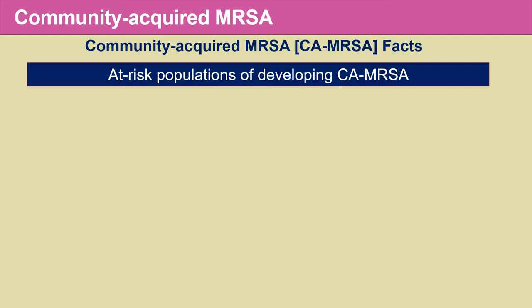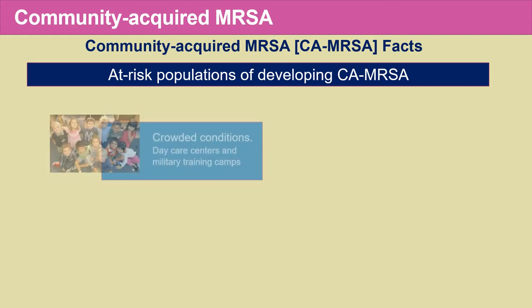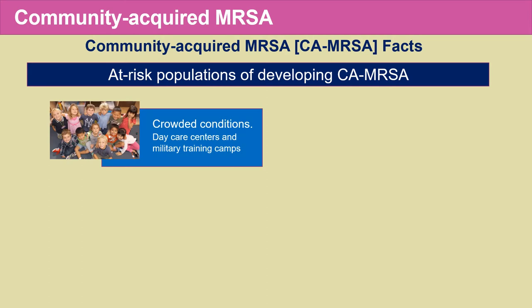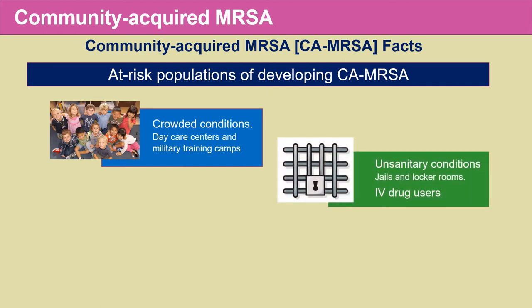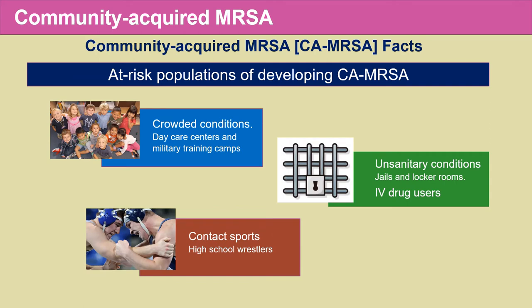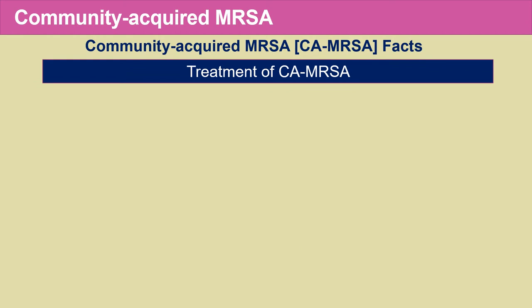Who are the at-risk populations for developing community-acquired MRSA? These include individuals in crowded conditions like daycare centers and military training camps, unsanitary conditions, individuals in jails, certain locker rooms, IV drug users, and people in contact sports such as wrestling in high school. These are all at-risk populations for developing community-acquired MRSA.